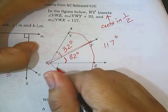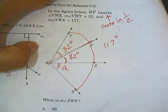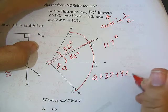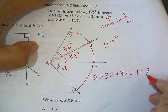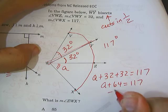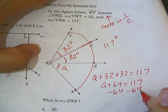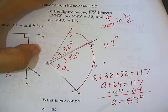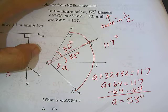Well, I know the total is 117 and I'm trying to find this missing angle, which is A. I just like A. A plus 32 plus 32 has to equal 117. A plus 64 equals 117. Subtract 64 from both sides and you get A equals 53 degrees. So your answer is B.